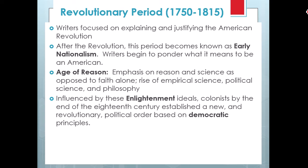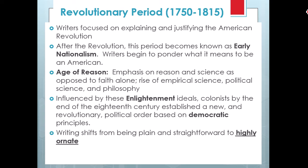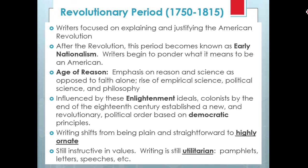Influenced by Enlightenment ideals, colonists by the end of the 18th century tried to establish a new and revolutionary political order based on democratic principles. Writing begins to shift from being plain and straightforward to highly ornate. Many of the people during this time are using rhetorical strategies to argue or to persuade, and even in fiction some of these rhetorical devices are still used. Many are still writing things considered utilitarian — pamphlets, speeches, letters. The first book we're going to look at is a seduction novel, Charlotte Temple, whose utilitarian purpose is to help young women not be seduced.